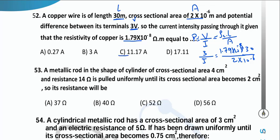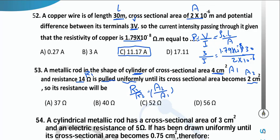A metallic rod in the shape of a cylinder with area A1 = 4 cm² and resistance R1 = 14 Ω is pulled uniformly until A2 = 2 cm². Using R1/R2 = (A2/A1)², R1 = 14, A2 = 2, A1 = 4. R2 = 56 Ω.